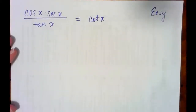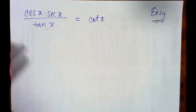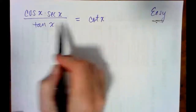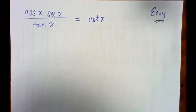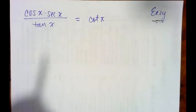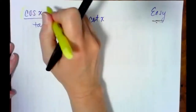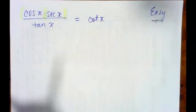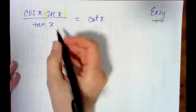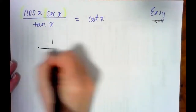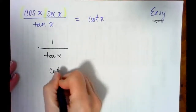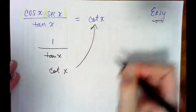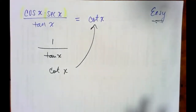Next, another easy one. So cosine times secant, all over tangent. Cosine and secant are reciprocals of each other, so if we multiply them together we get 1. Then we have 1 over tangent, and of course 1 over tangent is equal to cotangent. So we are verified.